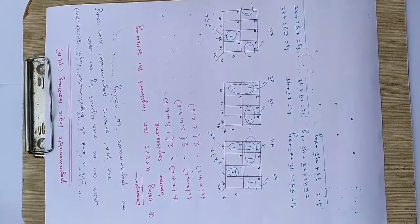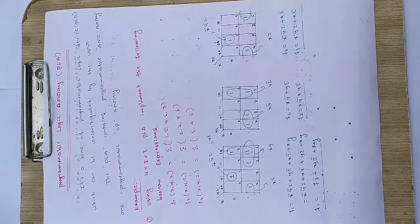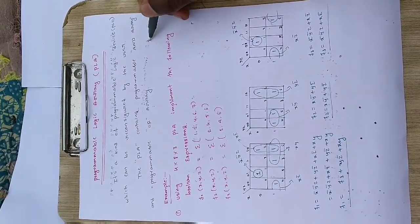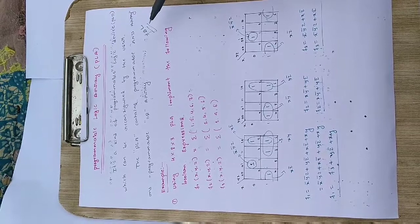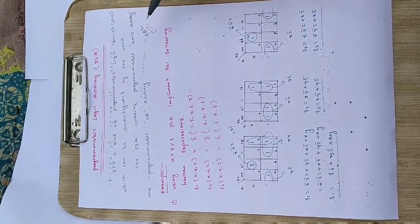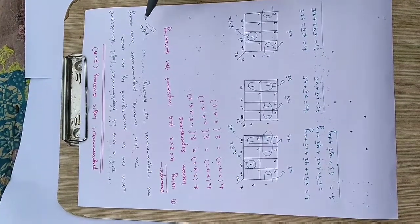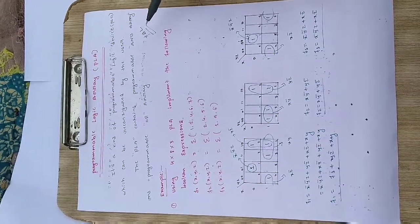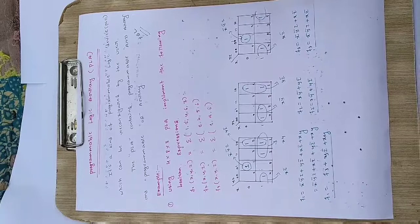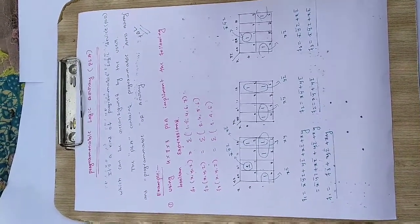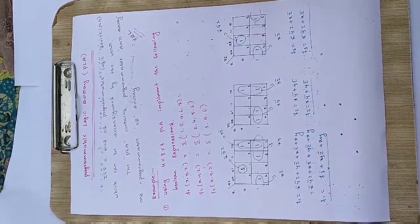The PLA contains a programmable AND array and a programmable OR array — this is very important. PLA is different from PAL in this sense: PAL, which is programmable array logic, has a programmable AND gate but the OR array is not programmable in PAL. In the case of PROM, we can program the OR array but cannot program the AND array, which is complementary to PAL. In the case of PLA, both the AND as well as the OR array are programmable. This is the basic difference between PLA and PAL.